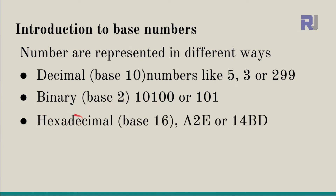Then we have hexadecimal. 'Decimal' refers to 10 and 'hex' means 6, so that is 6 on top of 10 — that's 16. That's why we call it base 16 or hexadecimal. Hexadecimal goes from 0 to 9 and then A, B, C, D, E, F. For example, A2E is a number, and 14BD is another hexadecimal number.